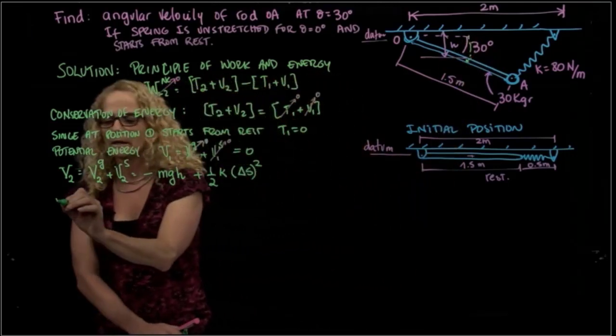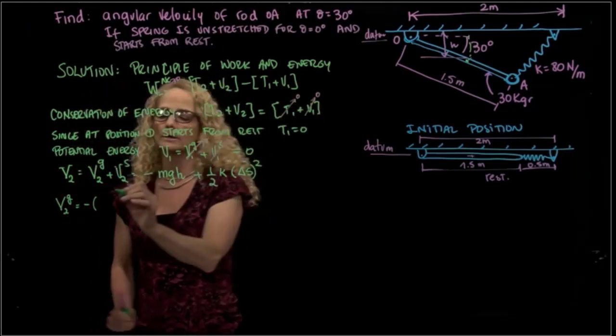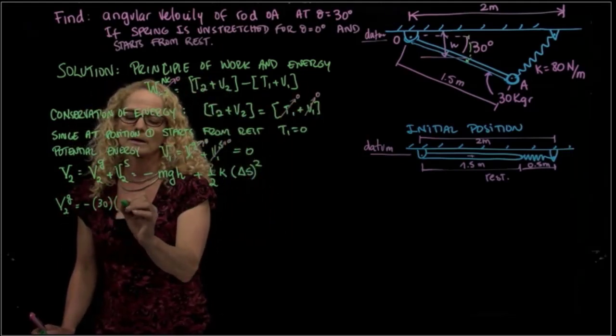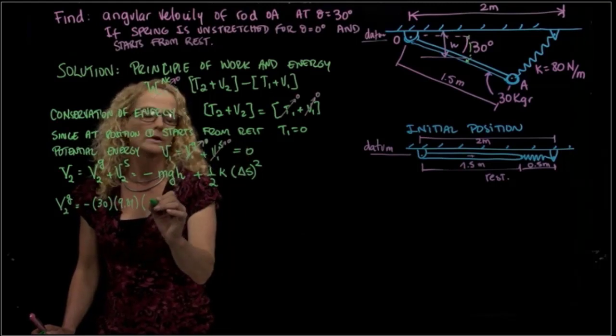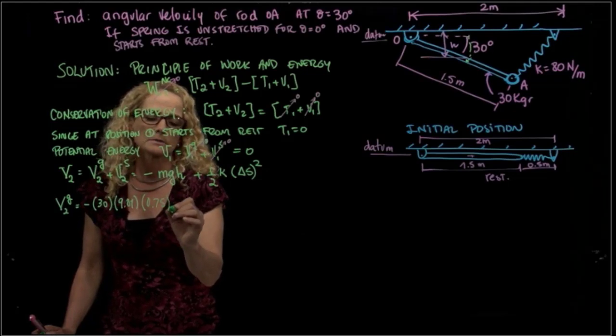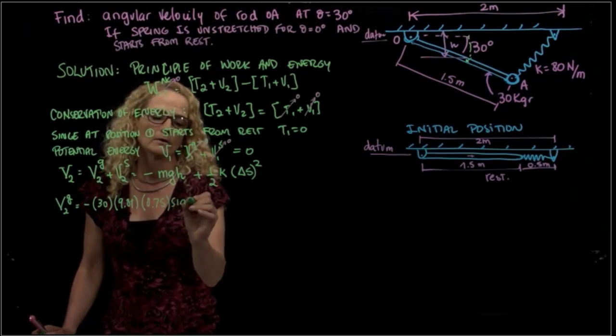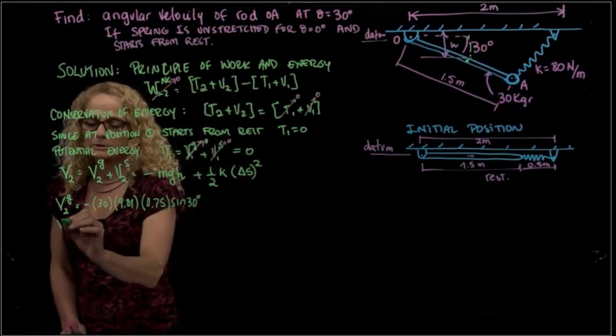So the energy done by the gravity will be negative the mass, which is 30 kilograms times 9.81 times h, which will be 0.75 times sine of 30.